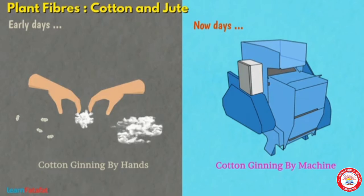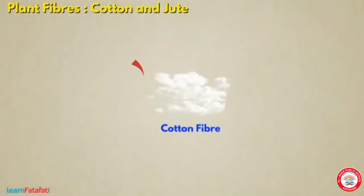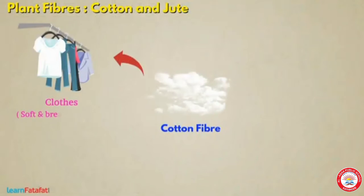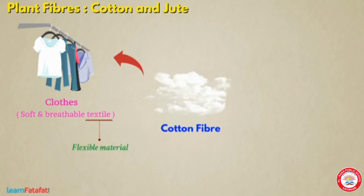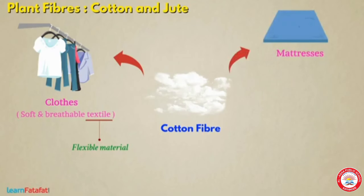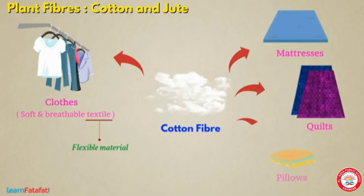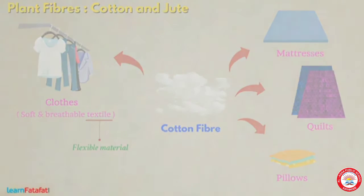From these cotton fibers we can make cotton clothes. Cotton clothes are a soft and breathable textile — textile means flexible material. We can also use cotton fiber to make mattresses, quilts and pillows.